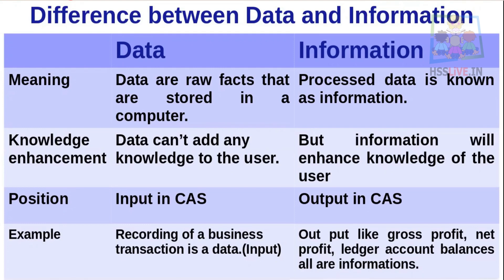In the computerized accounting system, data is the input and information is the output. For example: recording a business transaction is data (input); the output — like gross profit, net profit, ledger account balance — is information.